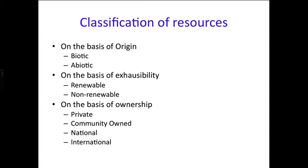On the basis of ownership, the first type is private or individual resources — things owned privately by people, such as their farmlands, houses, plantations, and well water. The second type is community-owned resources, which can be accessed by all members of the community, for example parks, picnic spots, and playgrounds.